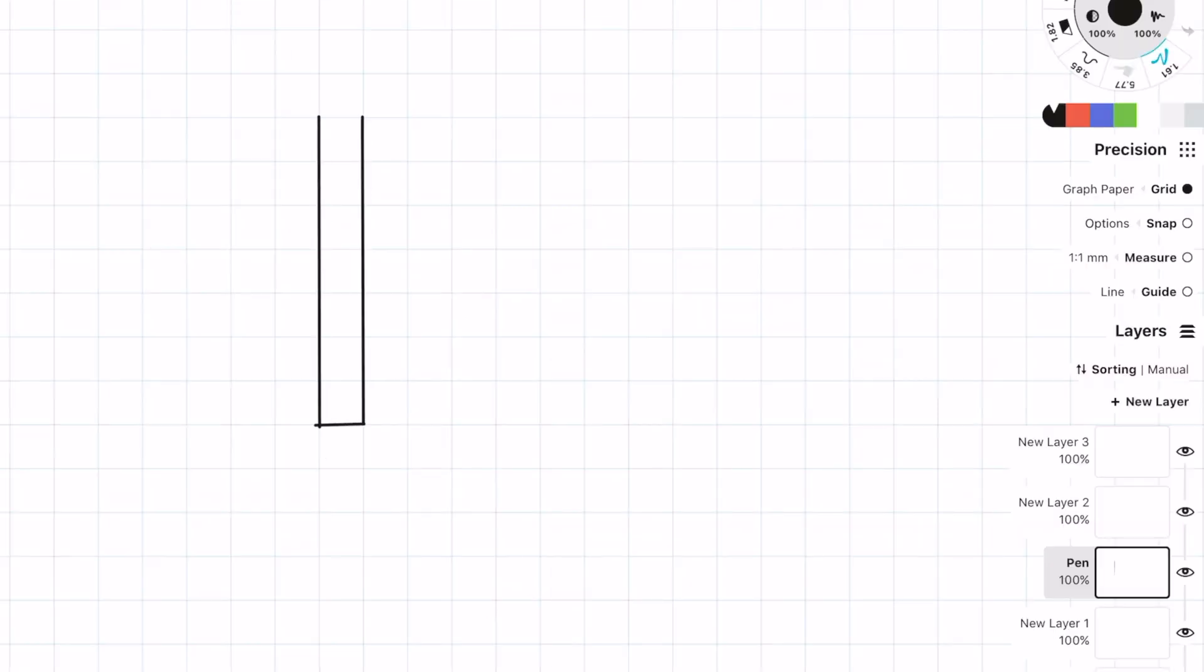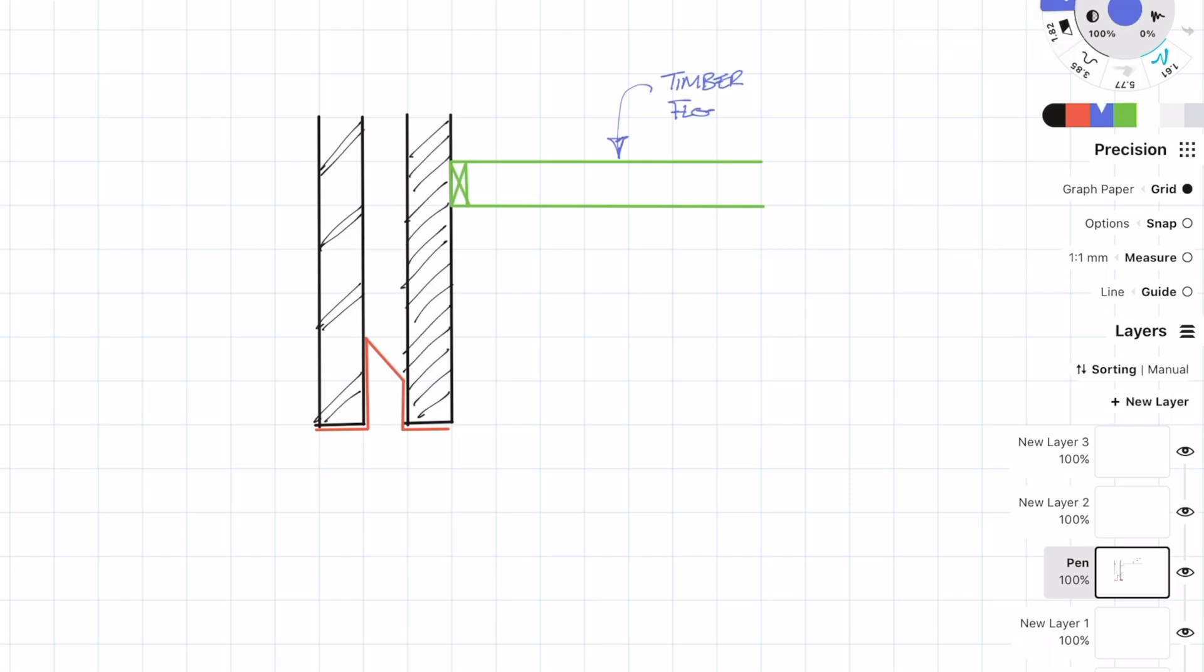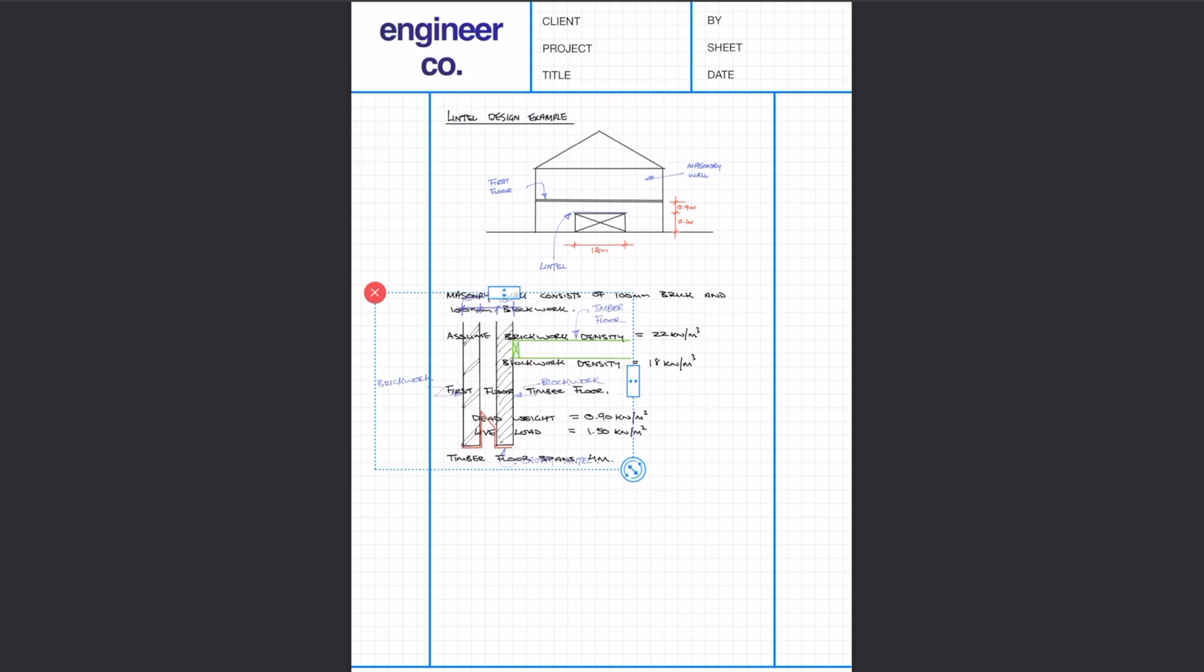So it's also a good idea to draw a quick section sketch just to make sure that you 100% know what you're designing. Once you've done the sketch just copy it into your calcs.